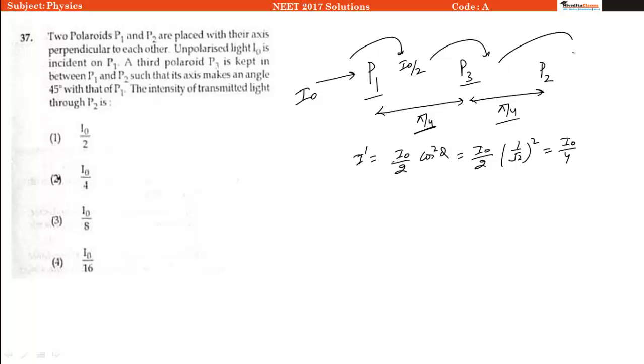And when it will go to P2, our final intensity will be equal to initial intensity, which is here I naught divided by 4, multiplied by cos squared of whatever angle we have here, that is again pi by 4.